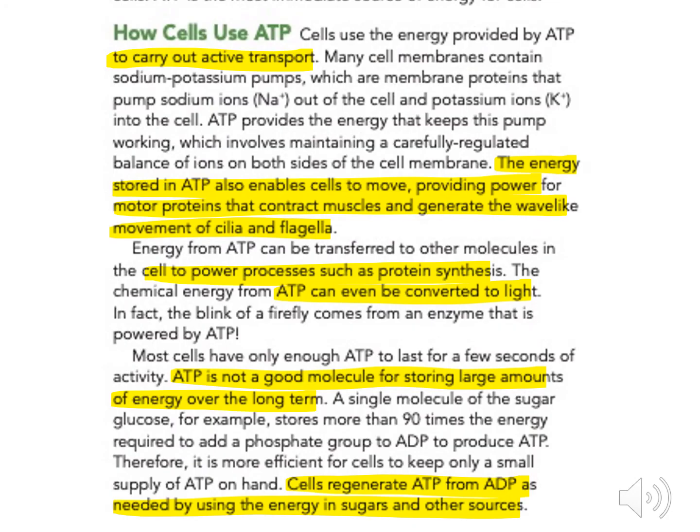Cells use the energy provided by ATP to carry out active transport. Many cell membranes contain sodium-potassium pumps, which are membrane proteins that pump sodium ions out of the cell and potassium ions into the cell. ATP provides the energy that keeps this pump working, maintaining a carefully regulated balance of ions on both sides of the cell membrane.